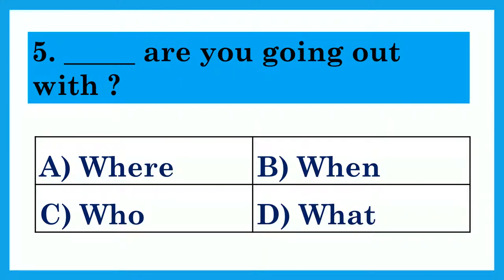Dash are you going out with? Option A: Where? Option B: When? Option C: Who? Option D: What? The answer is Option C: Who — Who are you going out with?